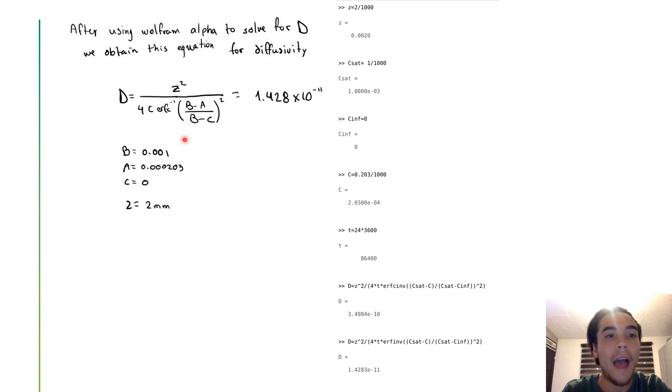After using Wolfram Alpha to solve for D, we obtain this equation for the diffusivity. Then we substitute our values and come up with this final result.